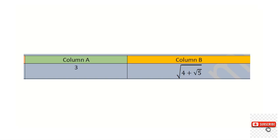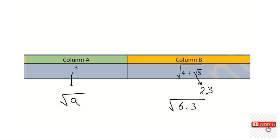The last question for this video is question number 25: comparing 3 versus root 4 plus root 5. Root 5 is approximately 2.3, so the right-hand side is approximately 2 plus 2.3 = 4.3. But wait — 3 is root of 9, and root 9 compared to root 4 plus root 5 (≈4.3) means the right-hand side is actually greatest.